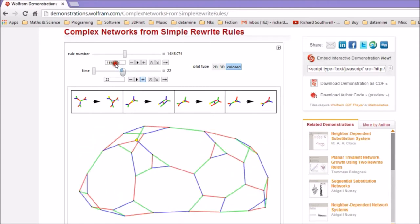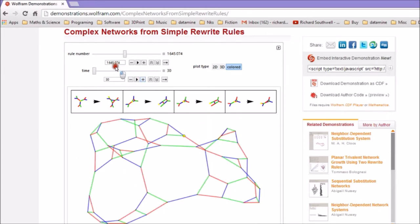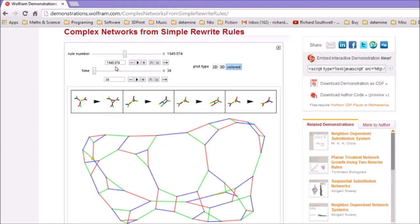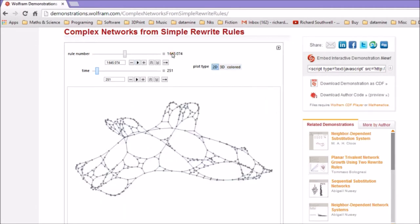We're interested in winning the competition, right? So what we want to do is not look at how one rule changes with time. We want to look at how the structure changes with the rule. Let's set the time as a constant, say 250, and we'll make it 2D because that's faster to look at.